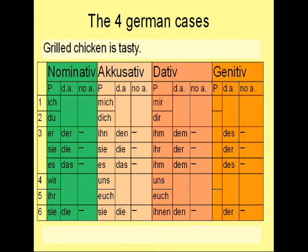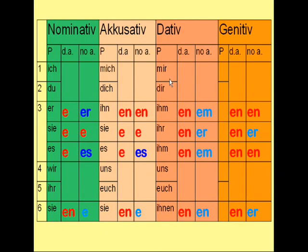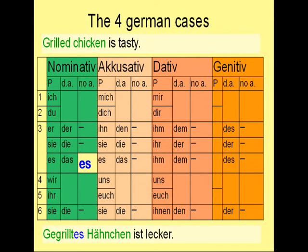How about: 'Grilled chicken is tasty.' Grilled means gegrillt in German, and chicken means Hähnchen, which is neuter. Grilled chicken is the subject of the sentence, so it's in the nominative case. Looking at the table for neuter nominative with no article, the ending is ES. The sentence reads: Gegrilltes Hähnchen ist Lecker.